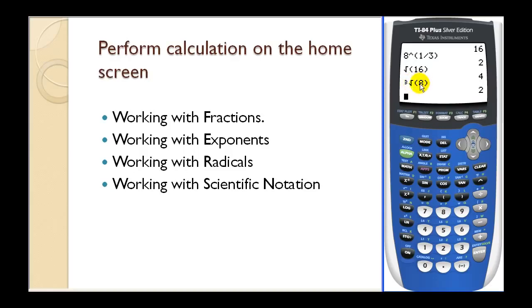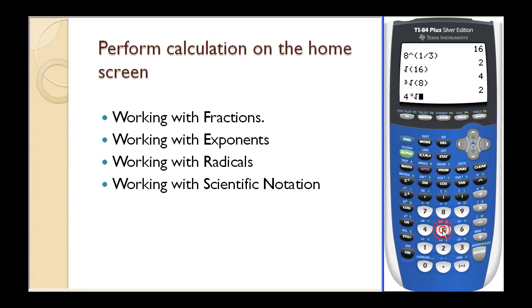For any index higher than three, we have a different procedure. For example, if we want to find the fourth root of 81, the first step is to type in the index four, press math, and then option five has an index of x. So if we select option five, this notation gives us the fourth root of 81. Press enter and it evaluates it.